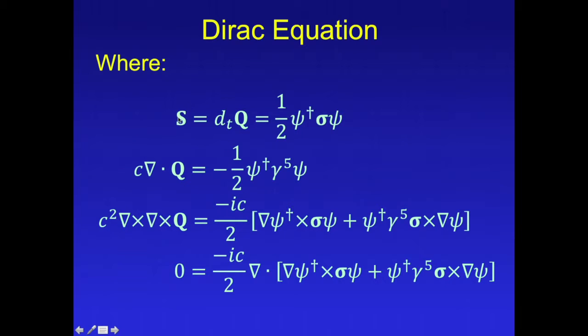So now our spin is defined as one-half psi dagger sigma psi. The divergence of q is proportional to the gamma-5 matrix, and the double curl of q is proportional to this expression here, which must have a divergence of zero since it's representing a curl.